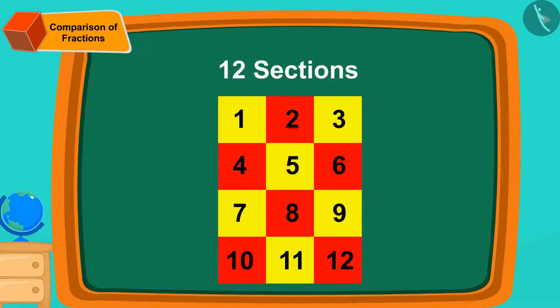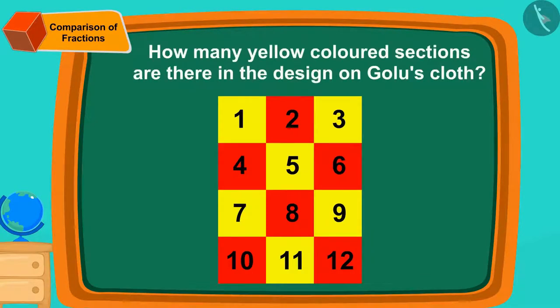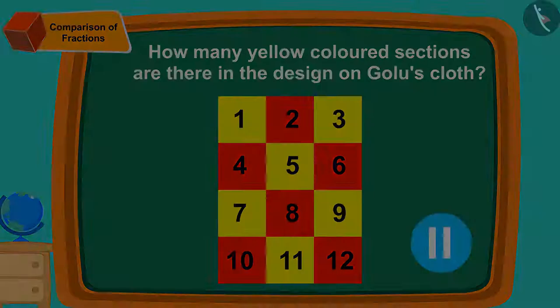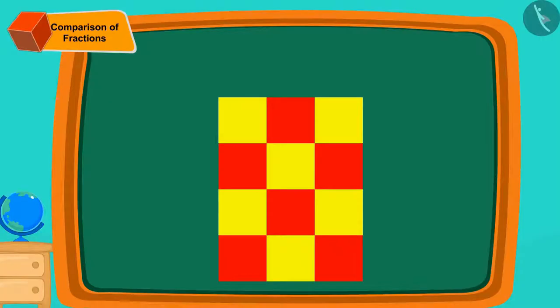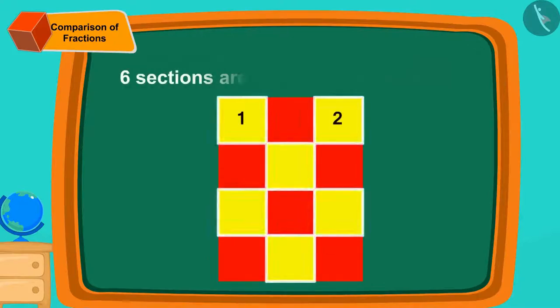Now, can you tell how many yellow-coloured sections are there in the design on Golu's cloth? If you wish to, you can stop the video and find the answer. Yes, in Golu's design, 6 sections are filled with yellow colour.